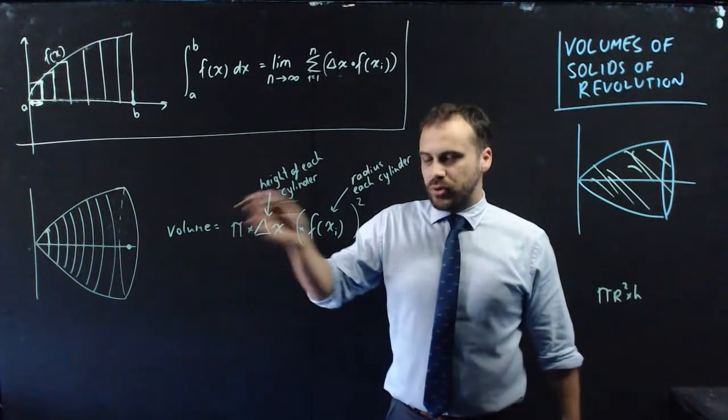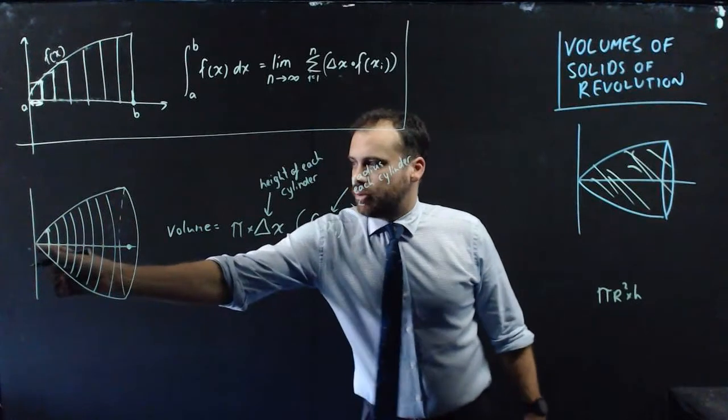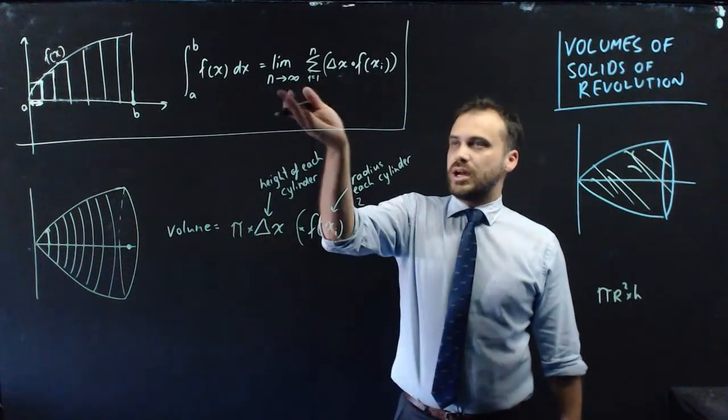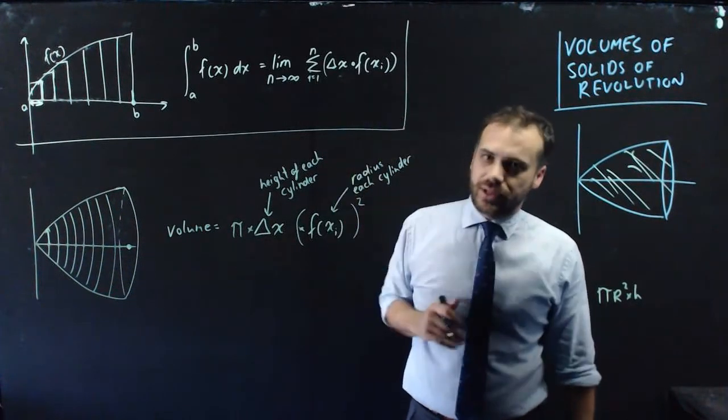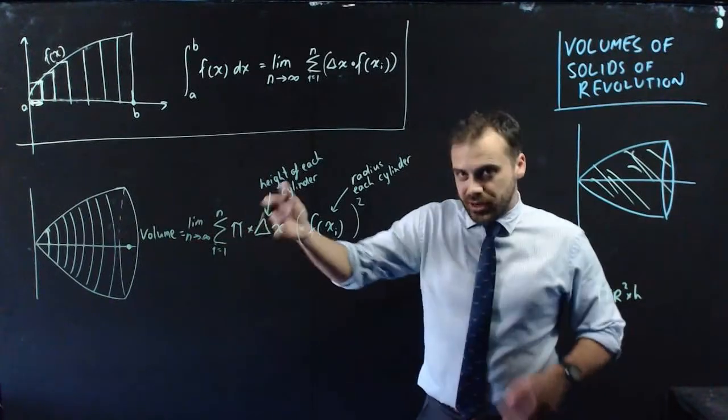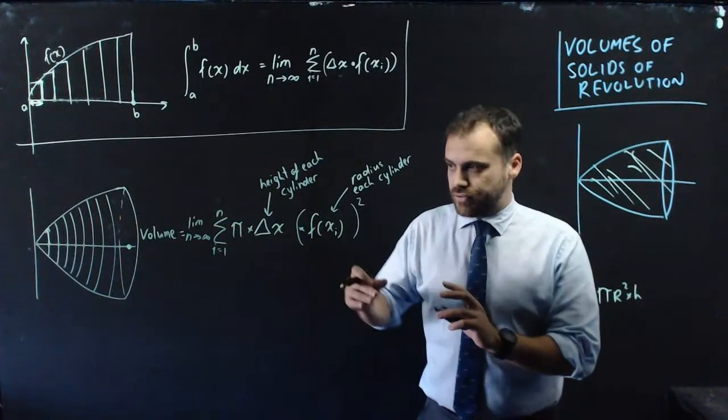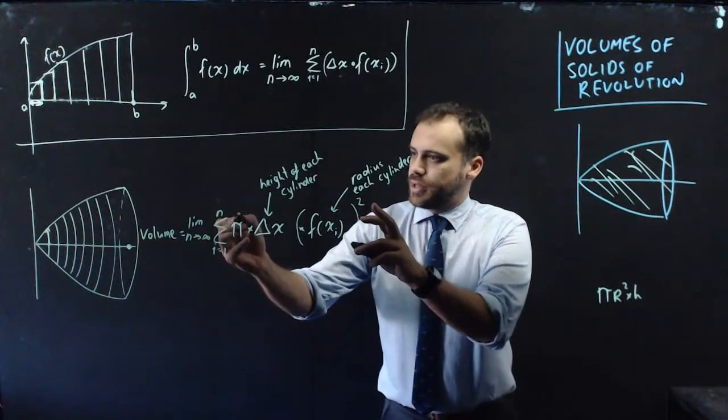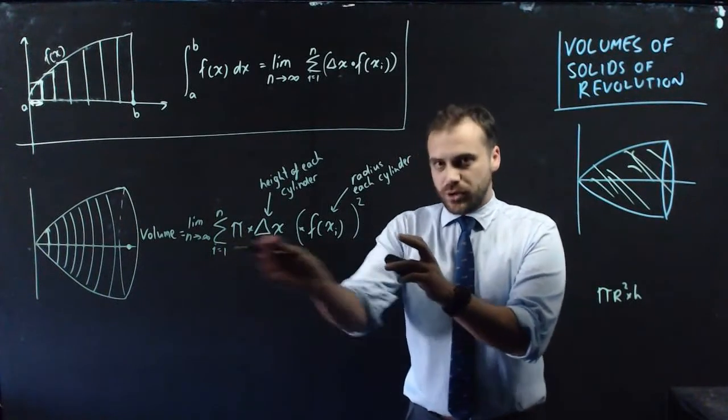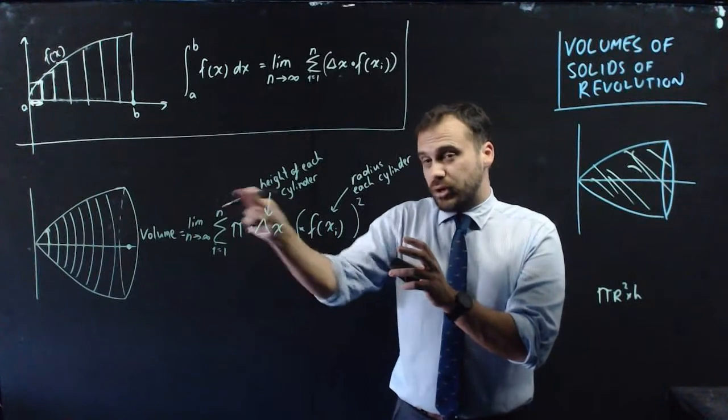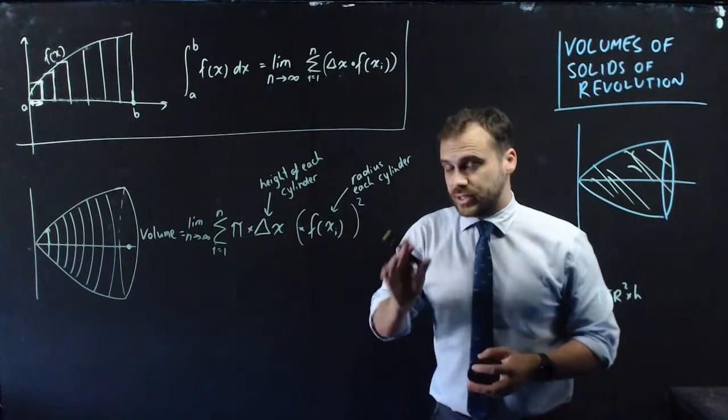Now, I don't want one individual cylinder. I want all of the cylinders. So I'm going to have to do some sum. Looks something like that. The volume equals the limit as n approaches infinity, the number of rectangles approaches infinity. And then we're going to sum up these products. And these products represent the volume of each individual cylinder.